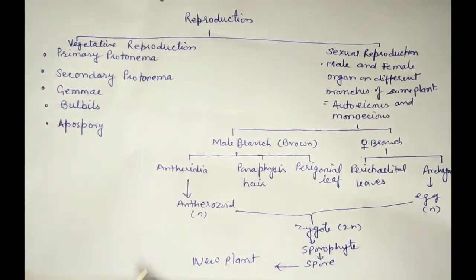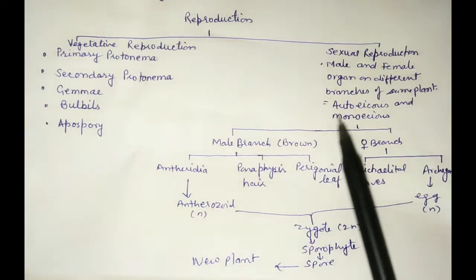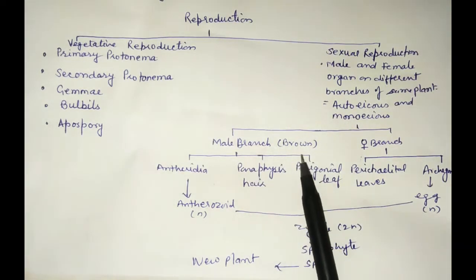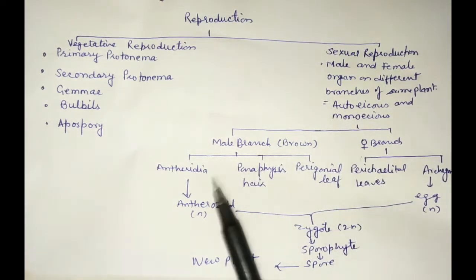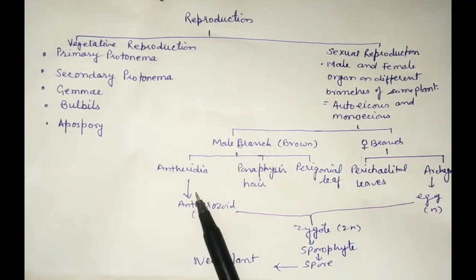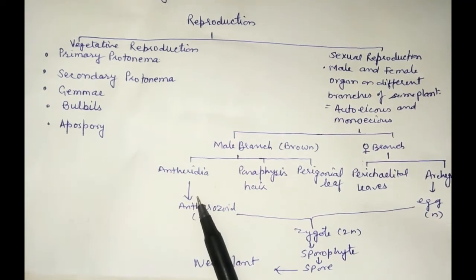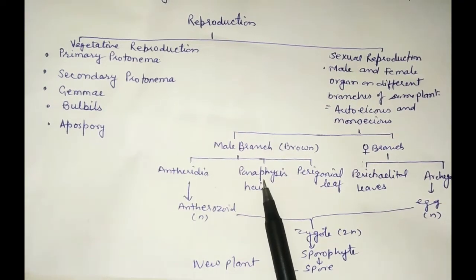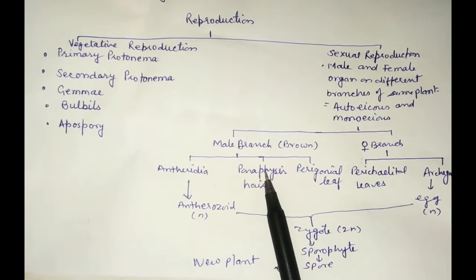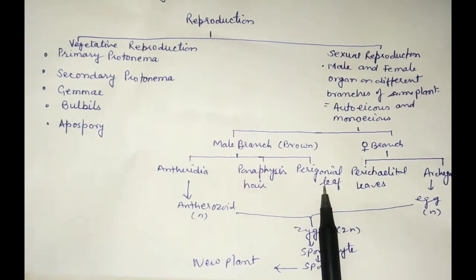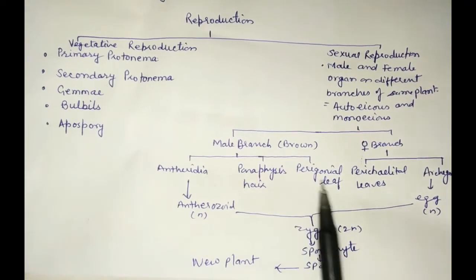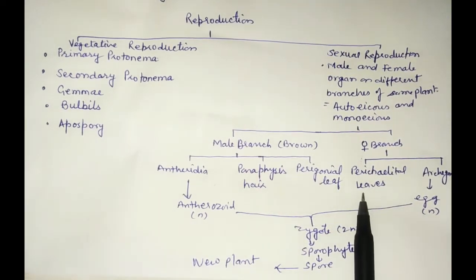I told you that male and female reproductive organs are on one plant, but their branches are different. The male and female branches are different. On the male branch, there are antheridia and paraphysis hairs. There are also perigoneal leaves present, whereas the female part is present in the perichaetial leaves.